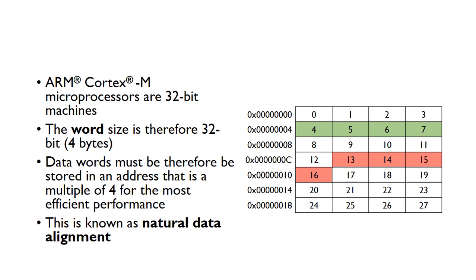Because the word size is 32 bits or 4 bytes, these data words must therefore be stored in an address that is a multiple of 4 to get the most efficient performance. Here we've got 28 different bytes organized in groups of 4. If you're going to store a 32-bit number, it's much better to store it starting at address 4, so the 4 bytes will be stored in addresses 4, 5, 6, and 7, because these are naturally aligned with this 4-byte word size.